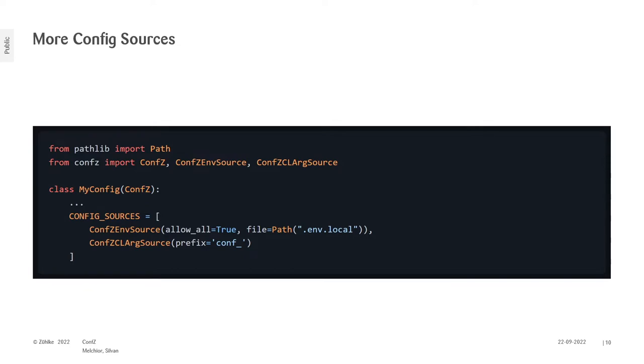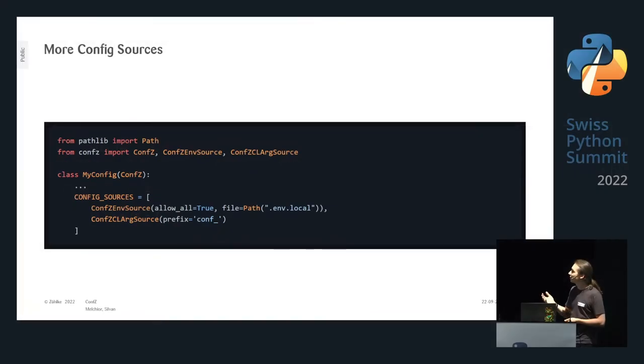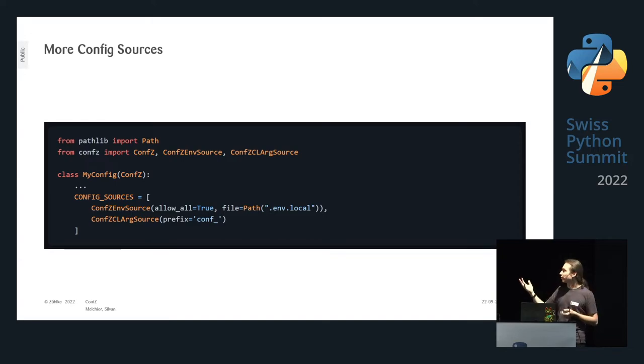Config_sources is quite flexible — it can also be a list, and later sources can overwrite earlier ones. For example, you can specify an environment source with allow_all=True, fall back to a .env file, and if that's not there use real environment variables. You can then say: also look at command line arguments starting with 'conf', and if any are defined, overwrite the others. With these two lines of code you define an application with environment variables overridable by command line arguments — useful on platforms like SageMaker for hyperparameter tuning.